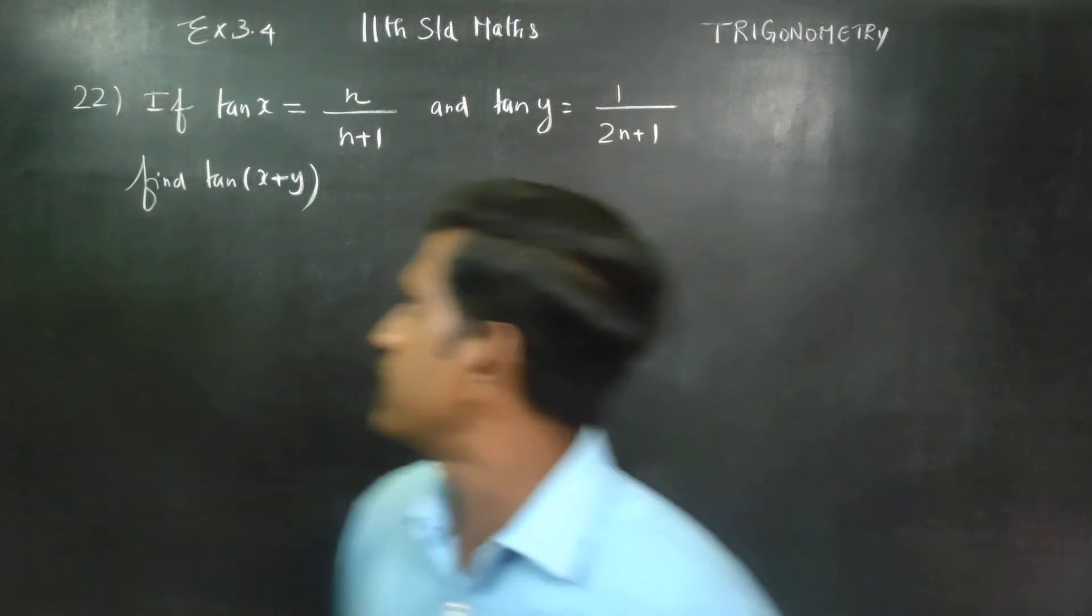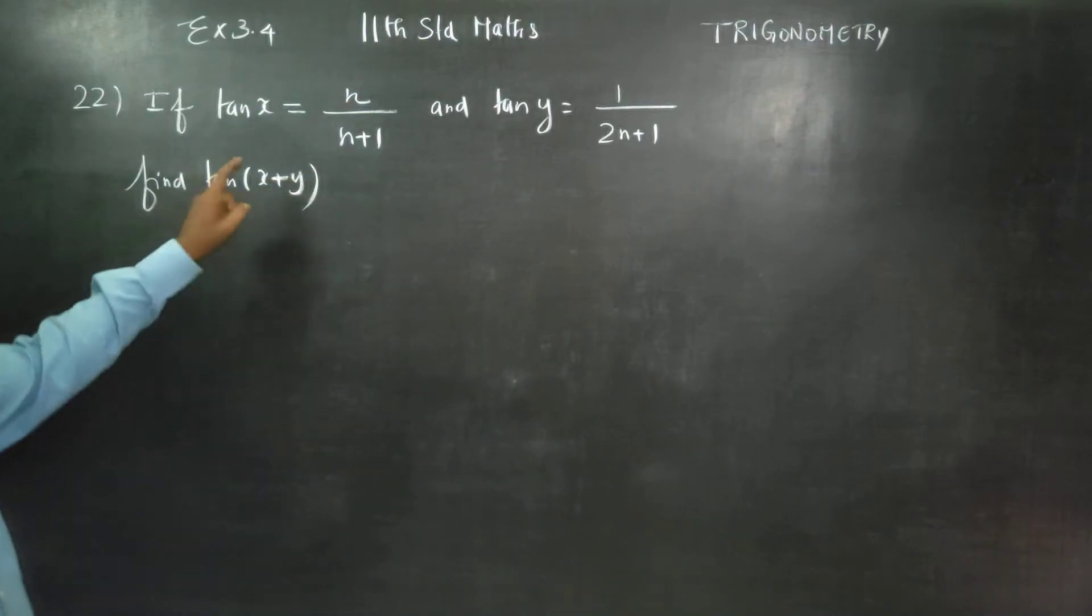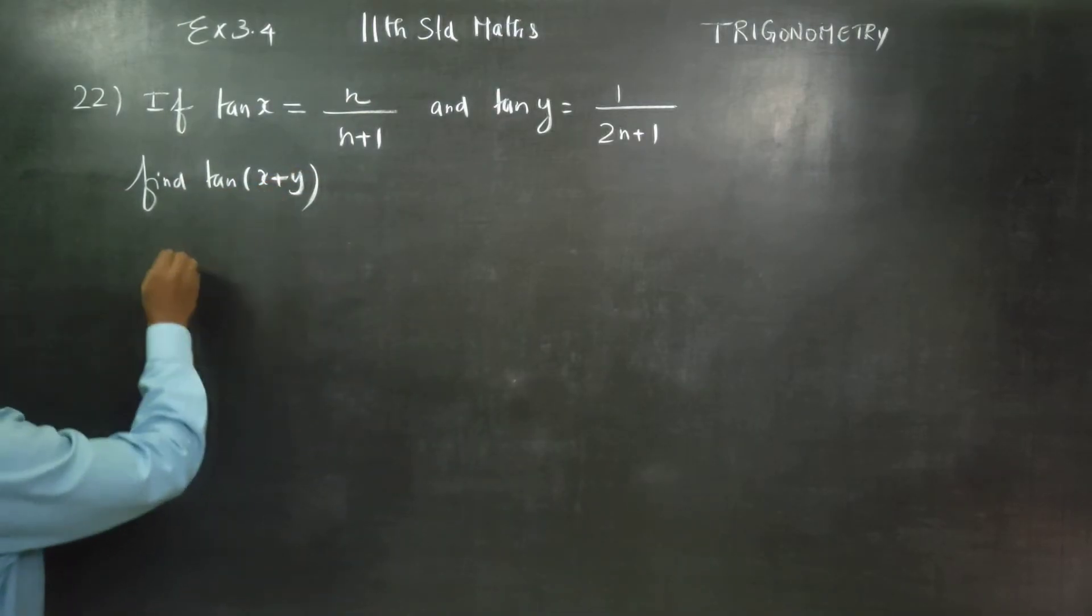Exercise number 3.4, sum number 22. If tan x is equal to n/(n+1) and tan y is equal to 1/(2n+1), find tan(x+y).